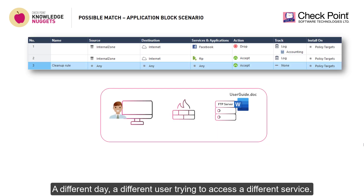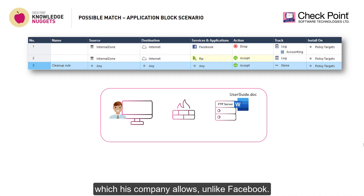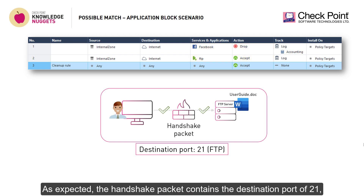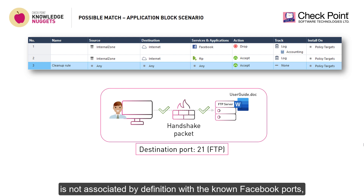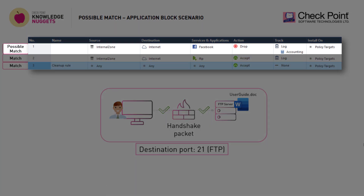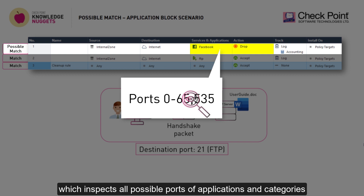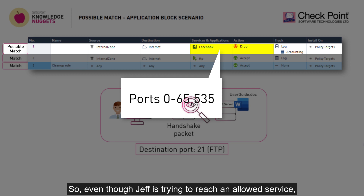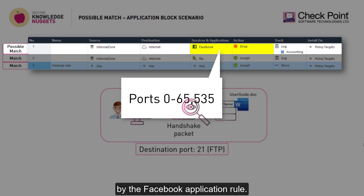A different day, a different user trying to access a different service. Jeff is trying to access an FTP server to download a user guide, which his company allows, unlike Facebook. As expected, the handshake packet contains the destination port of 21, which is the known FTP port. Even though port 21 is not associated by definition with the known Facebook ports, this rule will still be in possible match. This is due to a security mechanism within the Access Policy, which inspects all possible ports of applications and categories with a block action. So, even though Jeff is trying to reach an allowed service, his connection will still be processed in this case by the Facebook application rule.